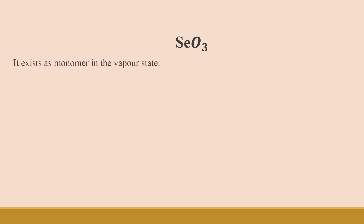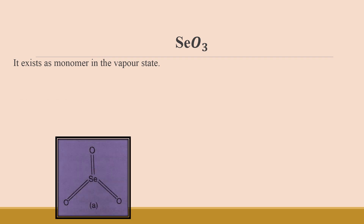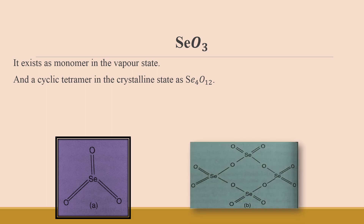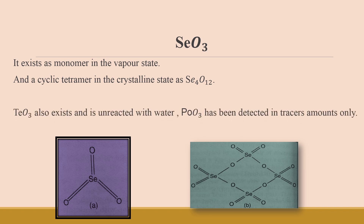SeO3 exists as a monomer in the vapor state and as a cyclic tetramer in the crystalline state with the formula Se4O12, where four selenium atoms combine with twelve oxygen atoms. TeO3 also exists and is unreactive with water, and PoO3 has been detected in trace amounts only.